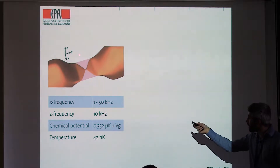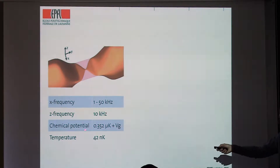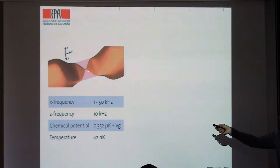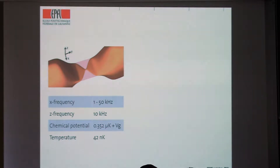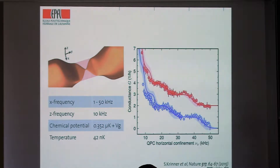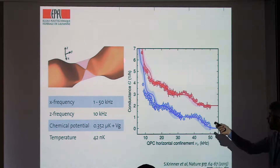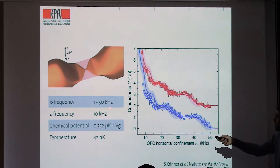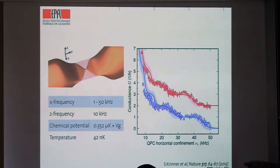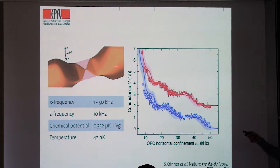These are the numbers we achieve for this particular structure. The key point is that the temperature here — 42 nanokelvin — is an order of magnitude below the smallest trap frequency along the contact direction. It's much smaller than the spacing between vibrational states in the contact. That's what allows us to resolve the contribution of each vibrational mode to transport, giving rise to quantized conductance.